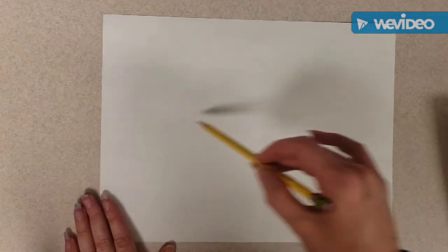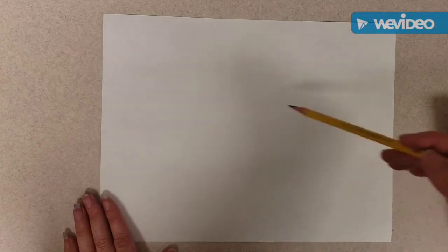Now you can start by just doing a line across your paper. It could be wavy, it could be curved, it could be whatever you want.